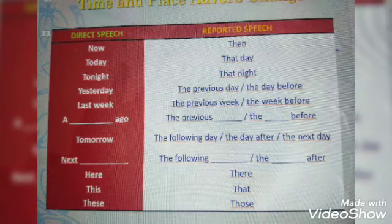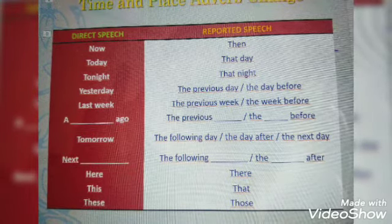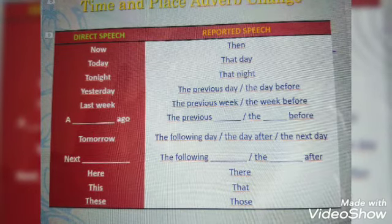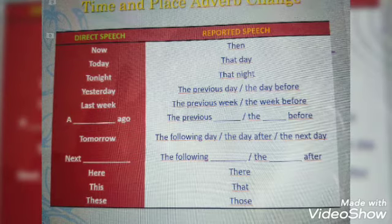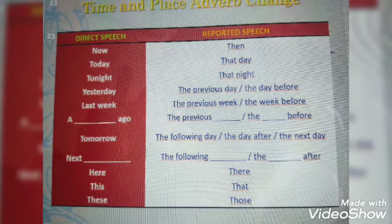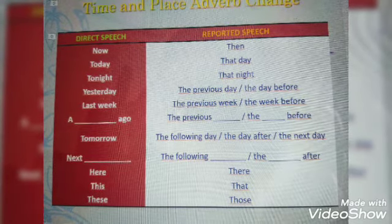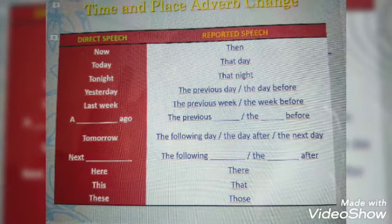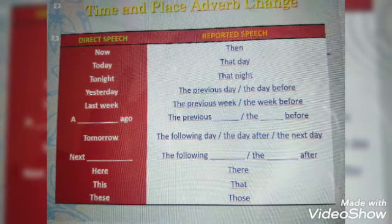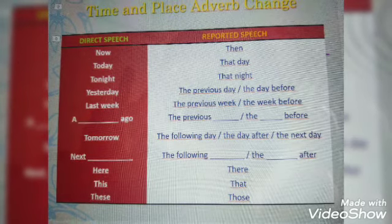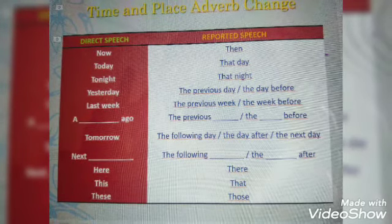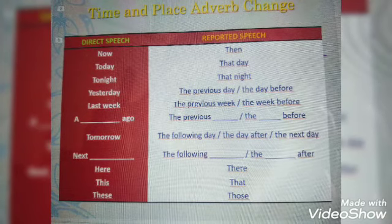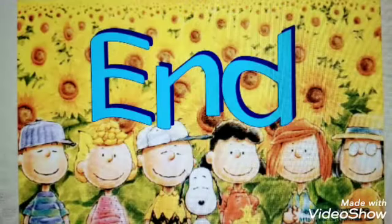Some more time expression changes: 'now' changes to 'then'; 'today' changes to 'that day'; 'tonight' changes to 'that night'; 'yesterday' changes to 'the day before' or 'the previous day'; 'last week' changes to 'the previous week' or 'the week before'; 'tomorrow' changes to 'the following day' or 'the day after'; 'here' changes to 'there'; 'this' to 'that'; 'these' to 'those'; 'a week ago' or 'a year ago' changes to 'the previous week/year' or 'the week/year before'.